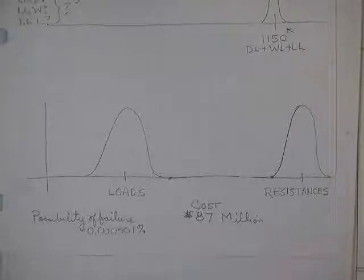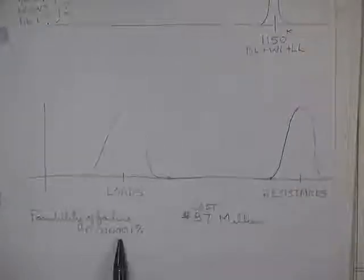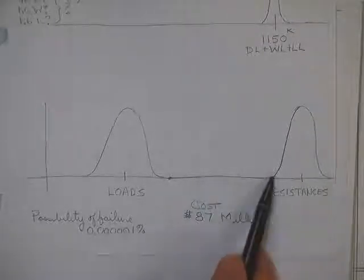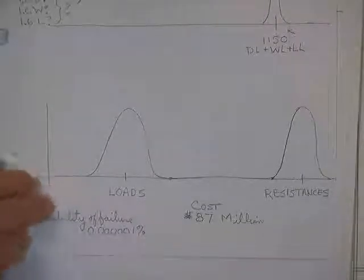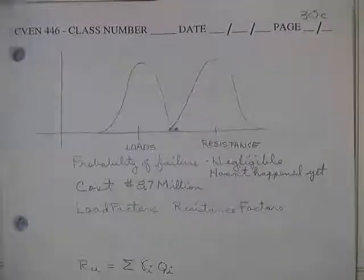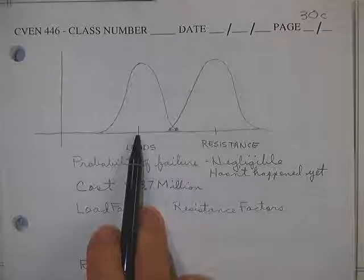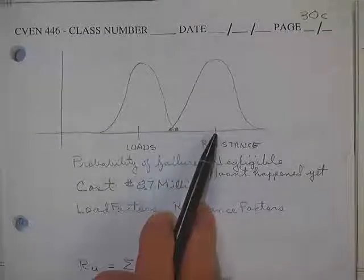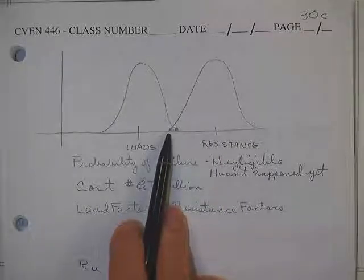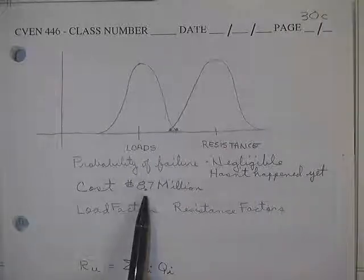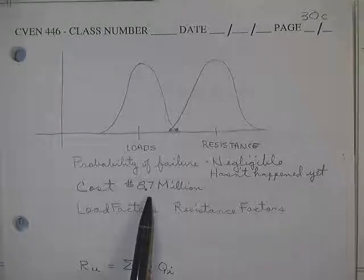This would be my way of doing things. I'd have the loads down here and the resistances up there. Nothing would ever fall down. Price? $87 million. Probability of failure? There's still a little because there's a possibility. But I mean, I can live with that, but you can't because we'd only have one building on campus.